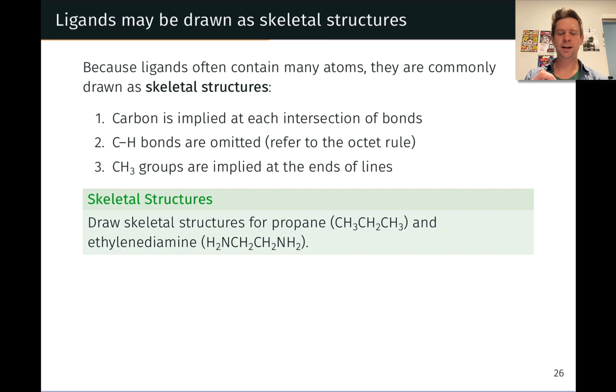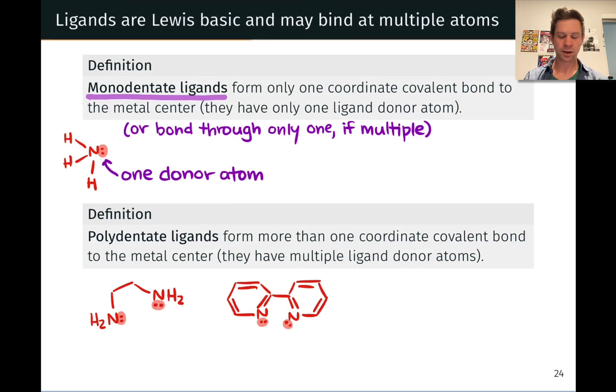But that carbon appears to be violating the octet rule, right? It appears to only have two bonds, and that's where rule number two comes in. C-H bonds are commonly omitted, but we assume that the octet rule is always followed. So, that carbon has enough hydrogens to satisfy the octet rule. Again, if we back up to ethylenediamine here, this carbon, for example, has two bonds to H's that are implied so that it satisfies the octet rule.